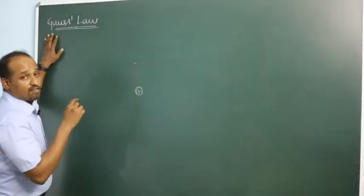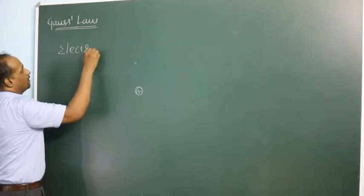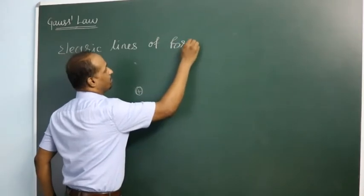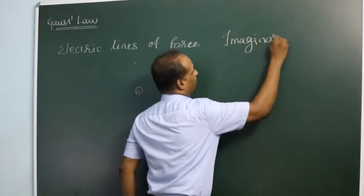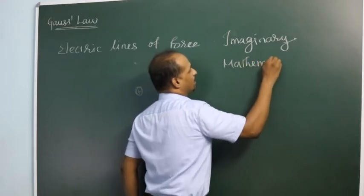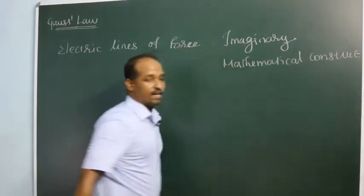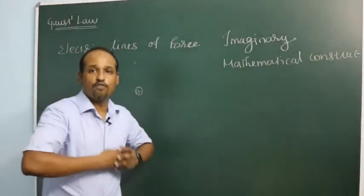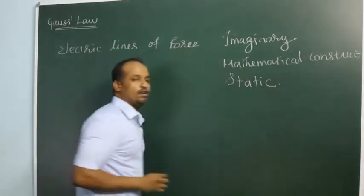In order to understand Gauss law, we need to first understand electric lines of force. Electric lines of force are imaginary — they are a mathematical construct. It is not real. Hence it is not correct to say that lines of force are flowing; they are static.